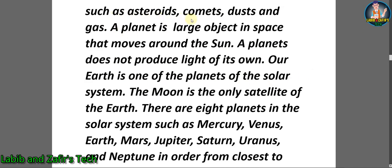A planet is large object in space that moves around the sun. A planet doesn't produce light of its own. Our earth is one of the planets of the solar system. The moon is the only satellite of the earth.